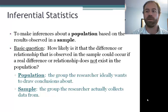The basic question is, how likely is it that the difference or relationship that is observed in the sample could occur if a real difference or relationship does not exist in the population.